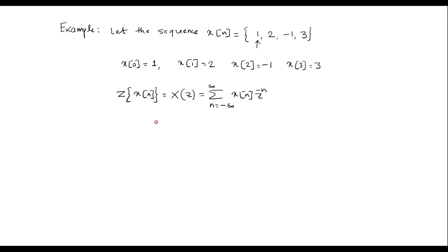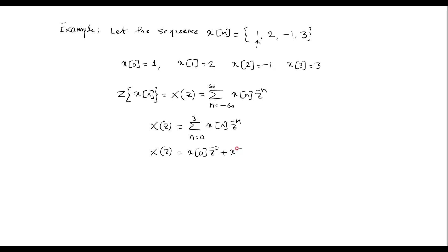The Z-transform of X(n) is represented as X(z), given by the summation from n equals minus infinity to infinity of X(n) times Z to the power minus n. Since X(n) exists from n=0 to 3, we expand the summation: X(0)·Z⁰ + X(1)·Z⁻¹ + X(2)·Z⁻² + X(3)·Z⁻³.